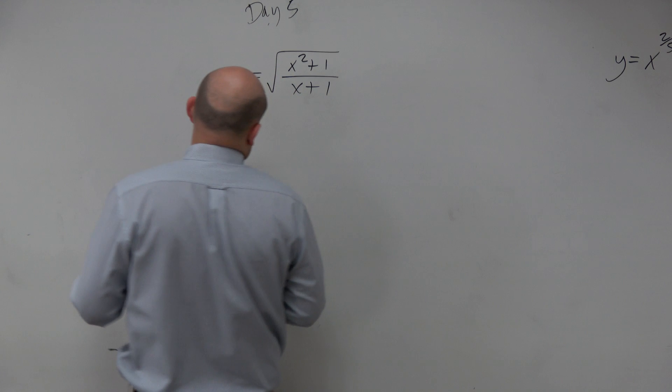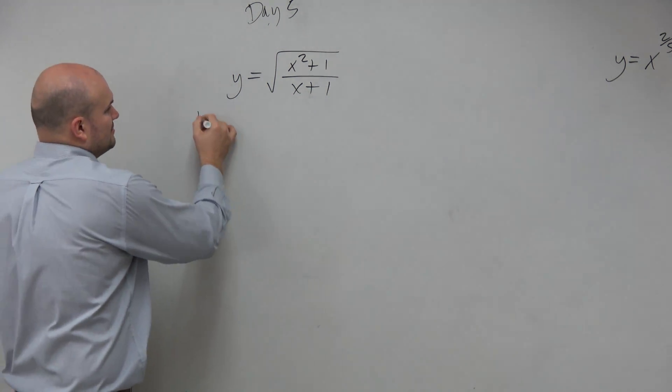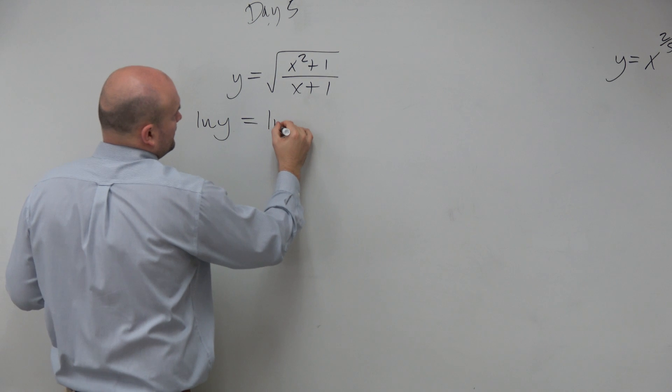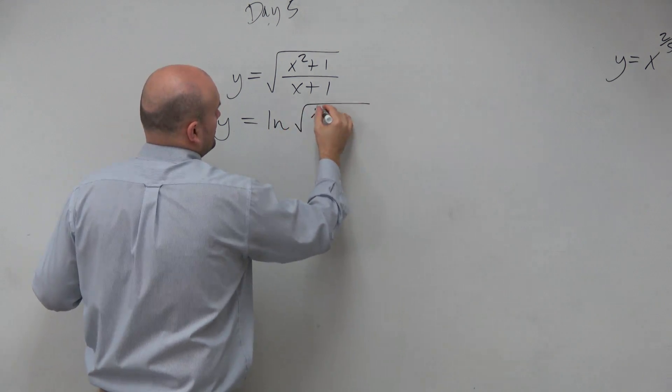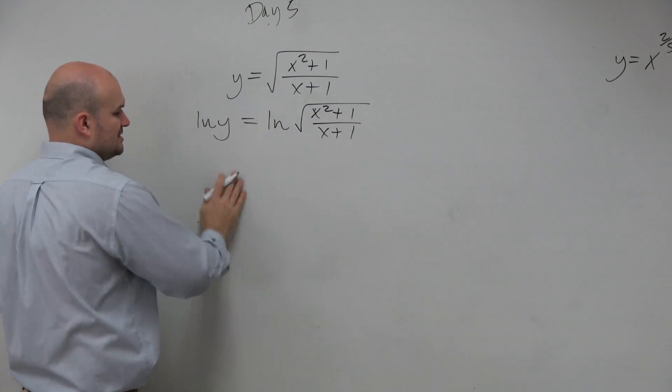So if I look at this, I can definitely apply the chain rule with quotient rule inside. But just making quick use of natural logarithms, I can go ahead and expand and condense.